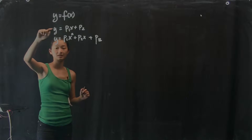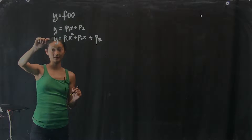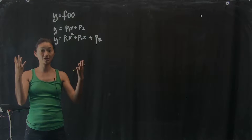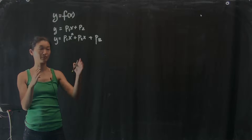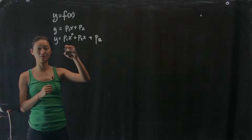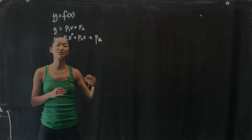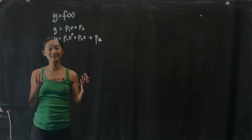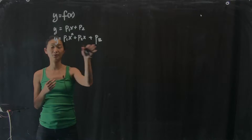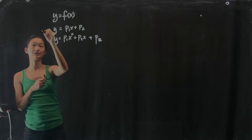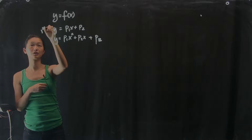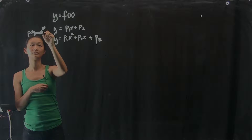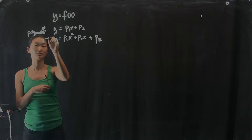The first form is a line and the second is a parabola. The regression framework allows us to construct the data matrix and solve for all of the parameters p1, p2, p3, etc. The generalized form of what we're doing is fitting the data to a polynomial — the first is a first-order polynomial and the second is a second-order polynomial.